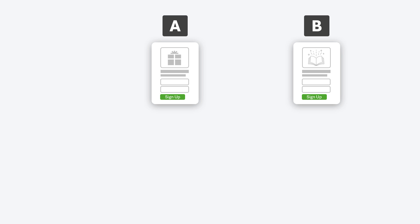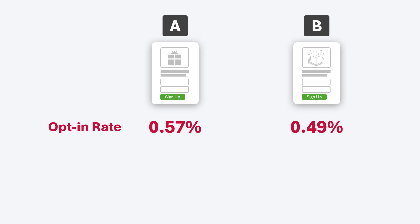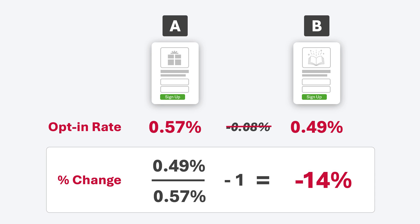This final example comes from our website, where we're split testing email signup forms and looking at opt-in rates. When your percentages are below 1%, this can be very deceiving — here we only have a difference of 0.08% between the two forms. But in reality, this is a 14% reduction in performance for form B. When your business relies on these forms to generate leads, this can have a significant impact on revenue.